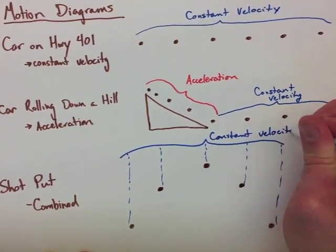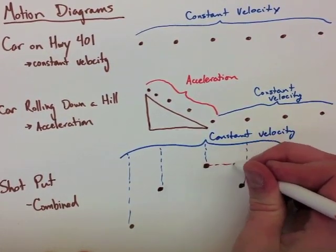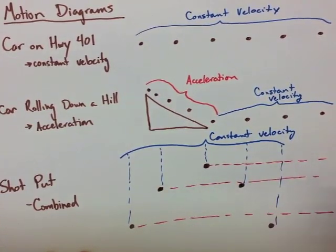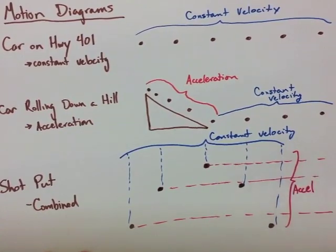However, if we look at the y component, we see at the top of the diagram, the dots are closer together because of gravity. Gravity slows the shot put down on the way up, and speeds it back up on the way down.